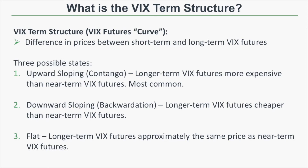The next shape is downward sloping, which is referred to as backwardation. Backwardation means that longer-term VIX futures are cheaper than near-term VIX futures. This shape is not as common because it typically only occurs when market implied volatility is really high — for example, during a severe market correction when the VIX spikes to 25, 30, or 50. Backwardation is pretty rare, only happening about 10 to 15 percent of the time. The last shape is flat, meaning longer-term VIX futures are approximately the same price as near-term VIX futures.